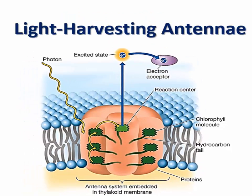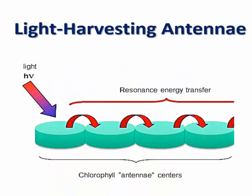A pigment enters an excited state when it absorbs a photon. The excited state is unstable, and the molecule may return to the ground state, emitting heat or light energy as fluorescence. But if fluorescence does not occur, the pigment molecule may pass some of the absorbed energy to other pigment molecules. This process of energy transfer between pigment molecules is known as resonance. This is what happens in the antenna complex, where light energy of different wavelengths is harvested by transferring light energy between pigment molecules, thus harvesting the energy from different wavelengths.